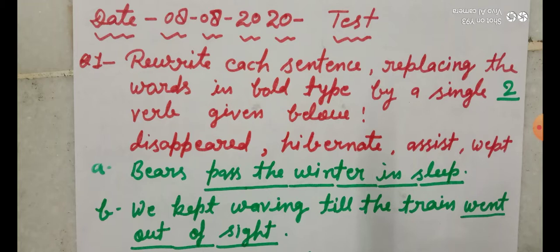Question number one, rewrite each sentence, replacing the words in bold type by a single word given below. Aapko, jho sentences yaha pe diya huay hai, usmei kuch underlined words hai. Aapko, upar likhha hua hai bold type. Bold type, yani ye letters, words, mote letters me likhya hoate hai.